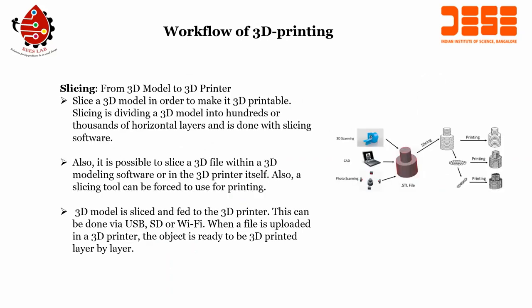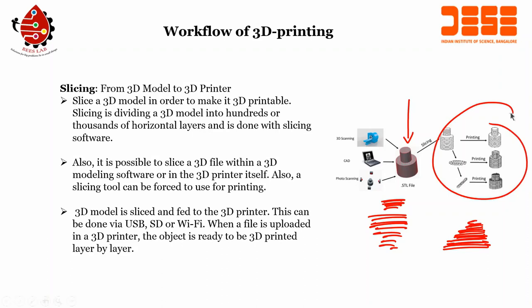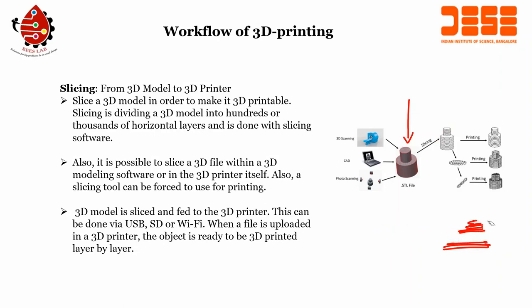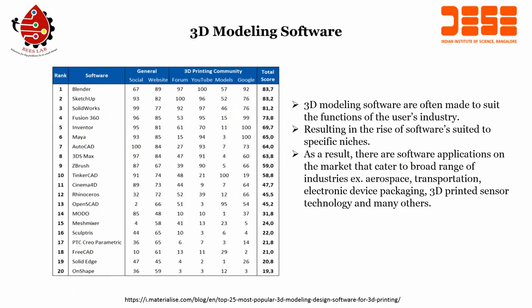What is slicing? To make a 3D printable version, we need to slice the 3D model. It is divided into hundreds of thousands of horizontal layers. The 3D model is sliced and fed to a 3D printer via USB, SD card, or Wi-Fi. When the file is uploaded to the 3D printer, the object is ready to be 3D printed layer by layer.